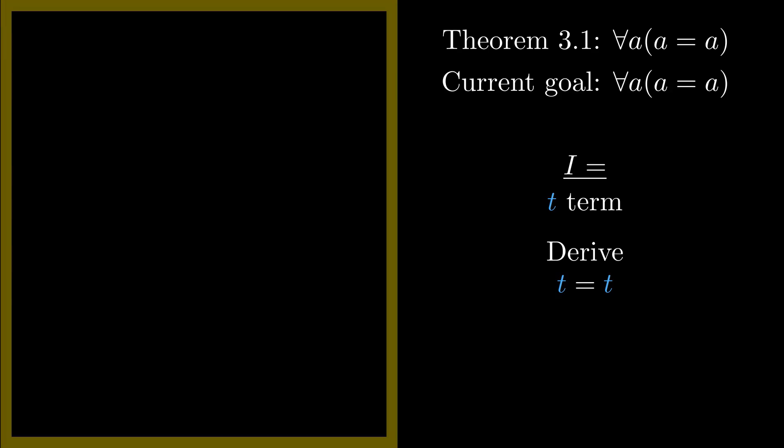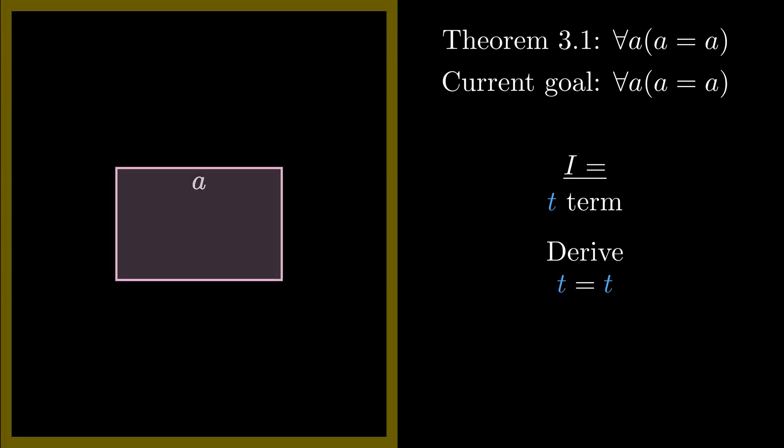Remember, that one told us, given any term t, we can derive t equals t. Our first step, since we're trying to prove a for all expression, is to introduce a variable of that for all. We draw a box and write a at the top with a line underneath. Inside this box, the variable a is introduced, so a is a term. So by our introduction rule for equality, we get a equals a. Now we're allowed to take this outside the box by appending for all a in front, giving us the result we wanted to prove. For all a, a equals a.